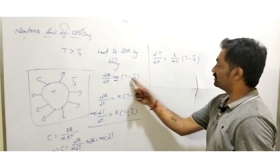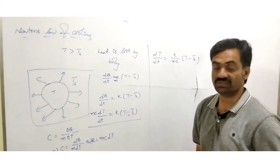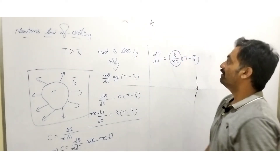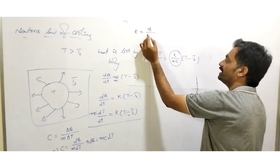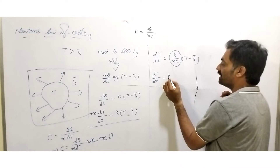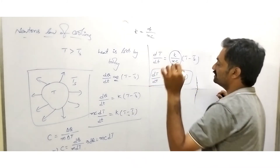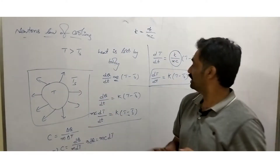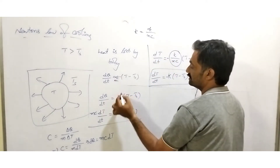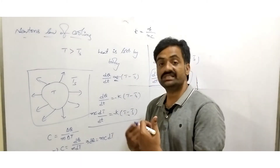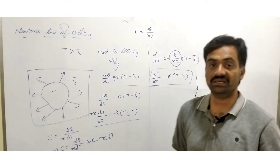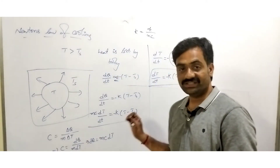Here k is the proportionality constant, m is the mass of the body, and c is the specific heat. Instead of representing all these constants separately, we consider a single constant K where K = k/(mc). So the expression becomes dT/dt = K(T − T_s). Since the body's temperature is decreasing — not increasing — we represent it with a negative sign. The final expression for Newton's Law of Cooling is: dT/dt = −K(T − T_s). Take a screenshot.